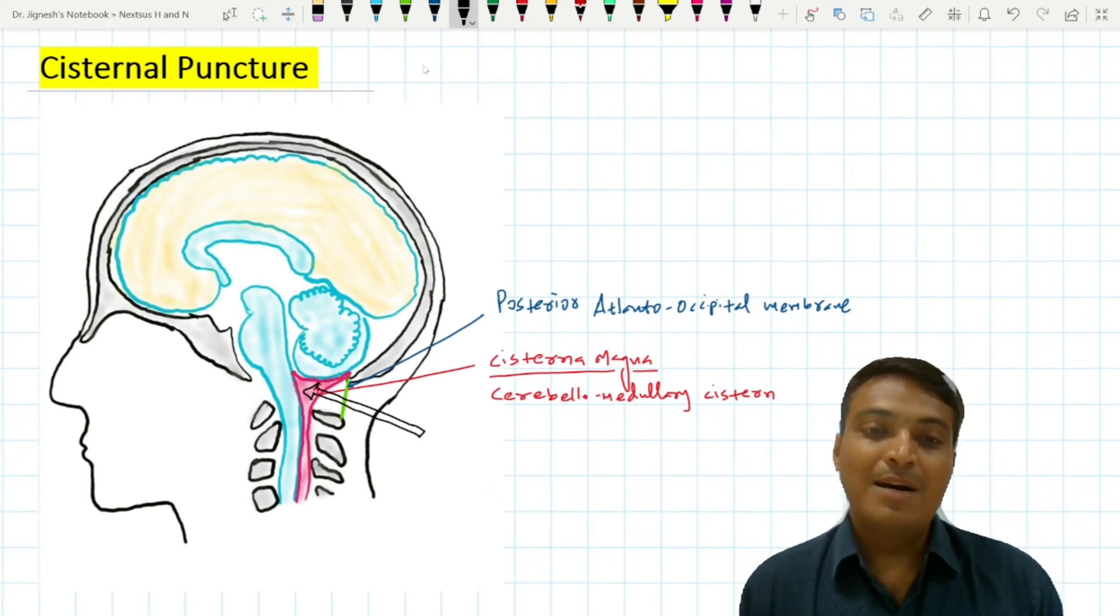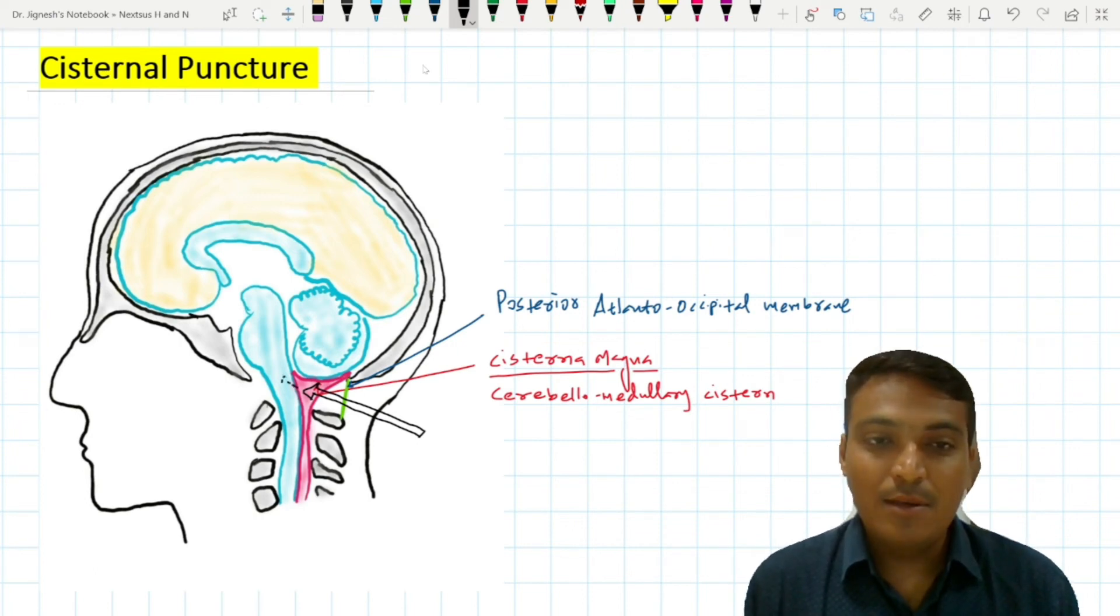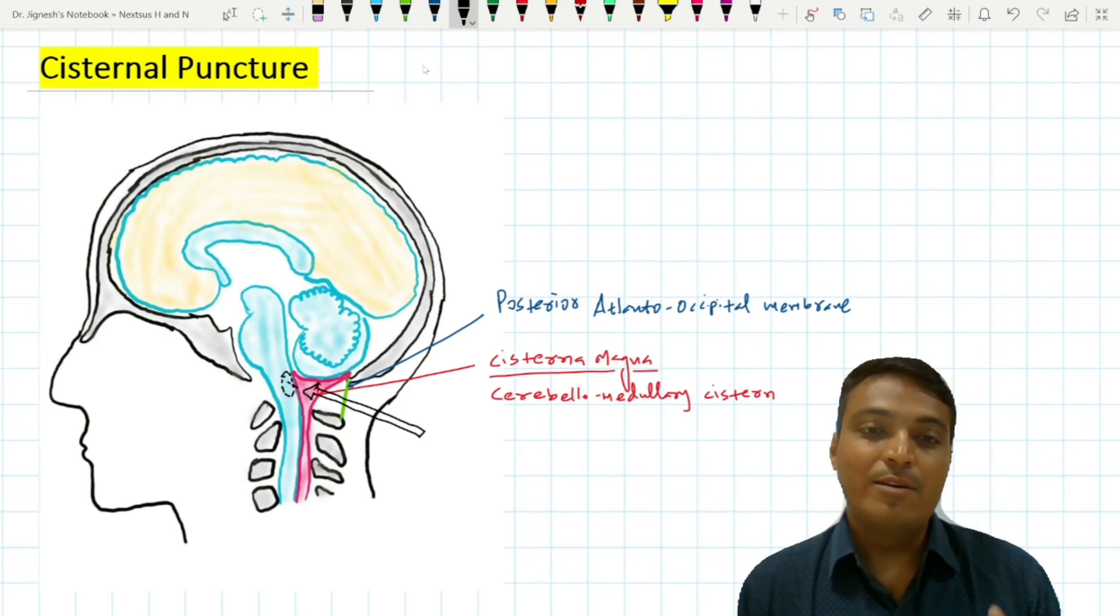But this procedure should be done by experienced hands only, because if the needle advances further forward, it may damage the lower part of the medulla oblongata. In the lower part of the medulla oblongata, we find many vital centers.